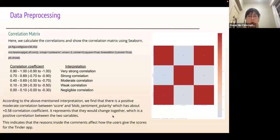We calculate the correlation and show the correlation matrix within Seaborn. According to this interpretation, we find there's a positive moderate correlation between the score and block sentiment polarity, which has about 0.58 correlation coefficient. This represents if one changes, they will change together in the same direction. This indicates that the reason inside the comment affects how the user gives the score for the Tinder app. Basically, the comment is the reason and score is the result.